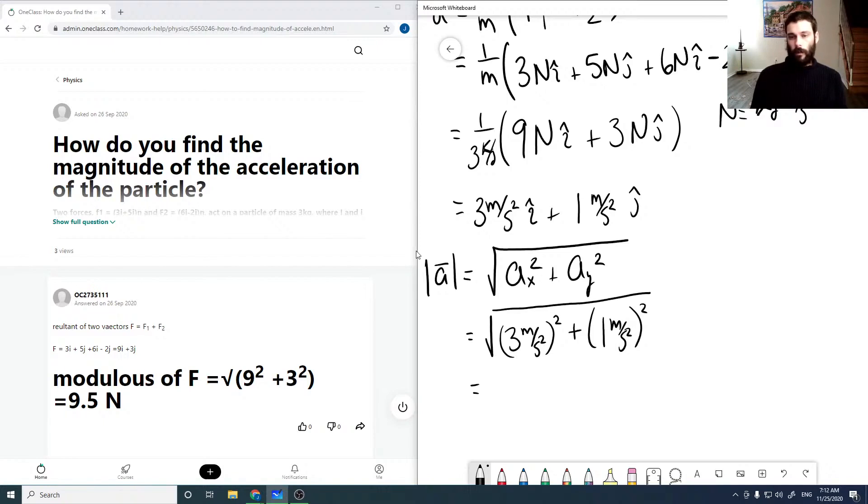So the square root, which equals the square root of 9 meters squared per second to the fourth plus 1 meters squared per second to the fourth, which equals root 10. And just taking the units outside, root 10 meters per second squared. So then that's the magnitude of our acceleration.